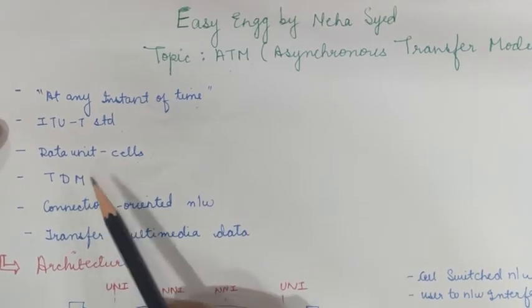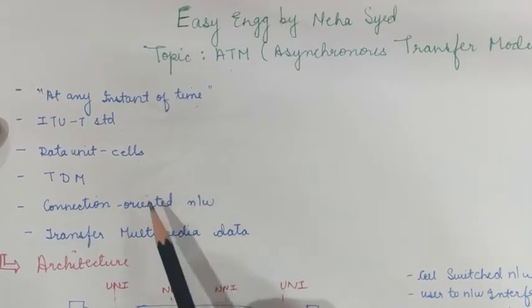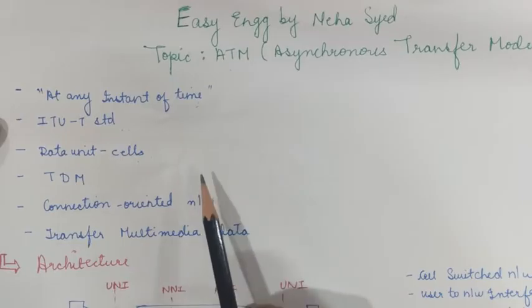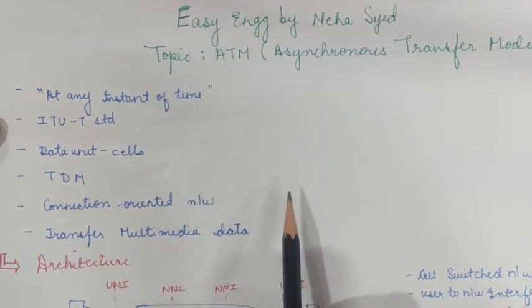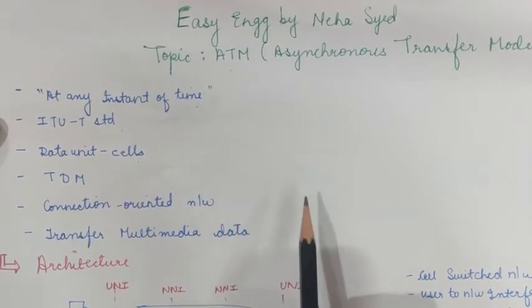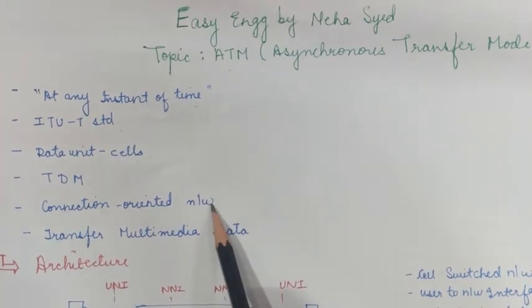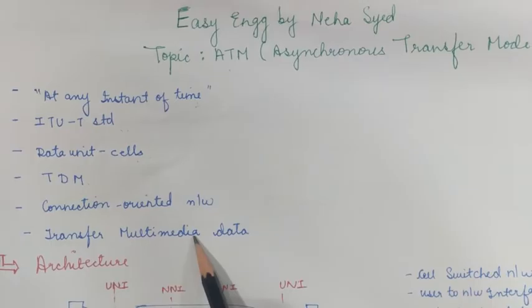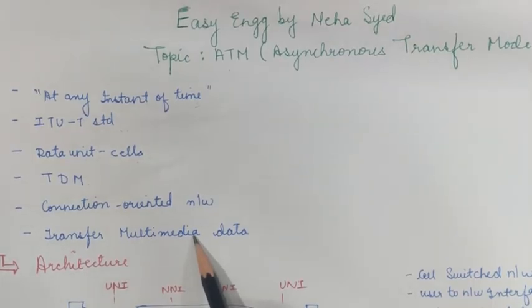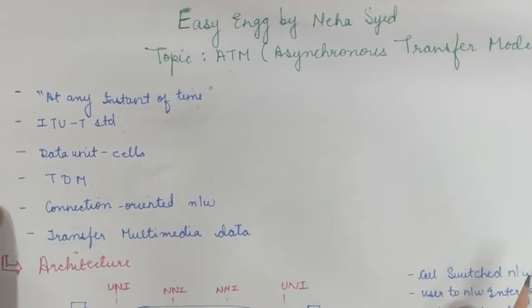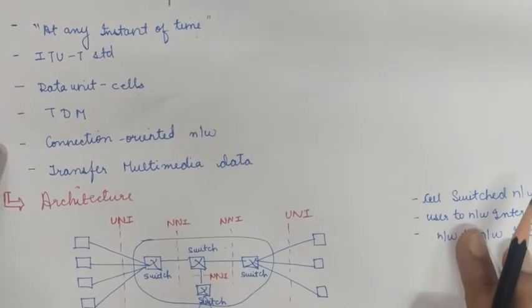ATM uses Time Division Multiplexing technology for data communication, which helps avoid queuing delay and makes it easy to switch and share time. Each signal is allotted a definite amount of time, and this happens when the data transmission rate of the media is greater than the source. The slots are so small it appears parallel. ATM is a connection-oriented network and it can transfer multimedia — text, audio, video, or a combination of them.